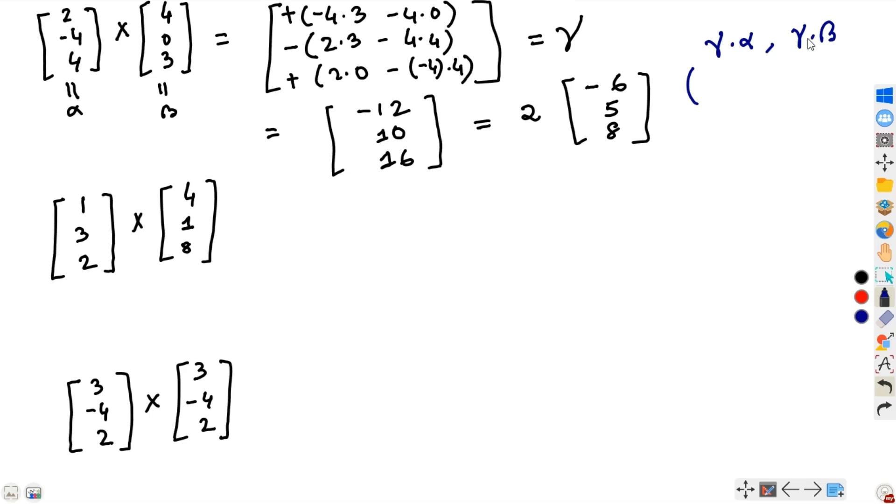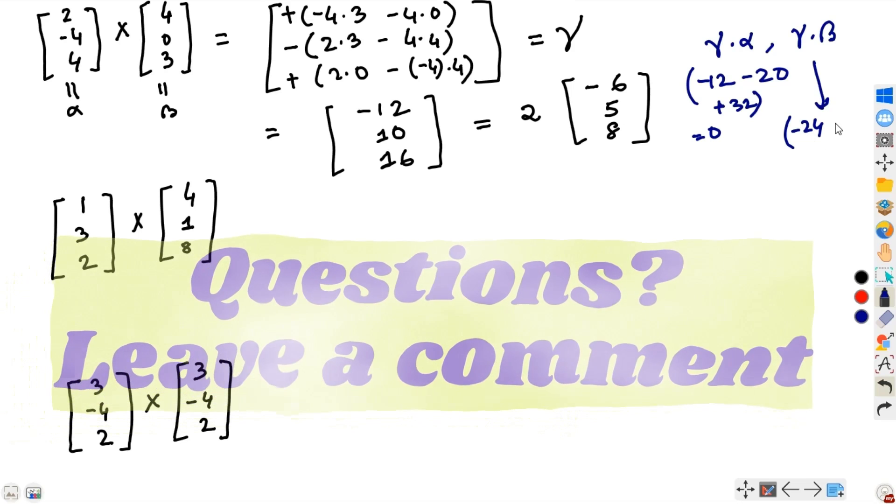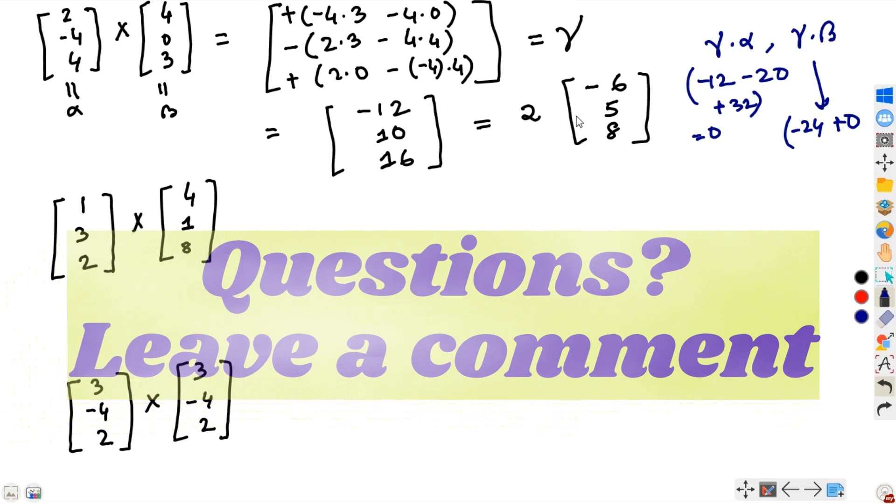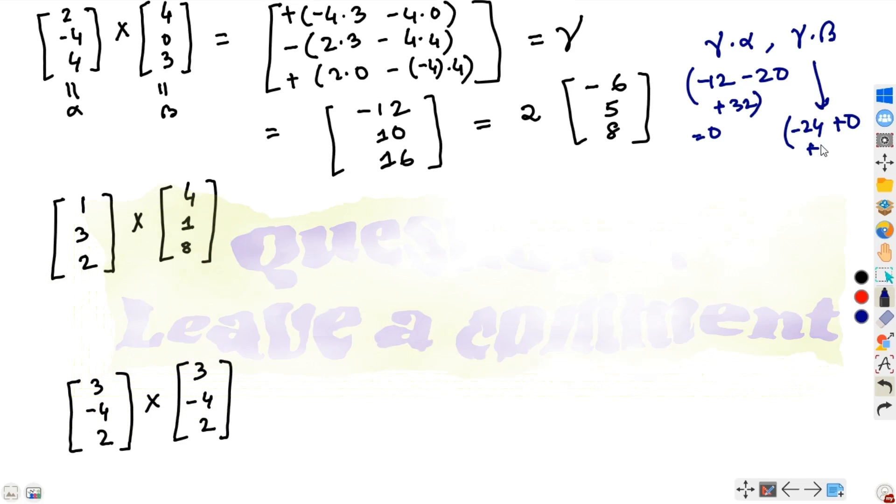We have minus 6 times 2 minus 12, 5 times minus 4 minus 20, and 8 times 4 is 32. This is 0. Similarly, minus 6 times 4 minus 24, 5 times 0, 8 times 3 plus 24. This is also 0. Both are 0, therefore this is correct.